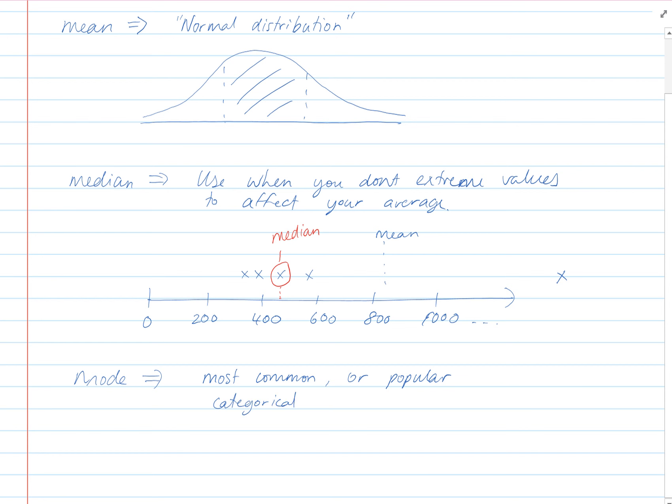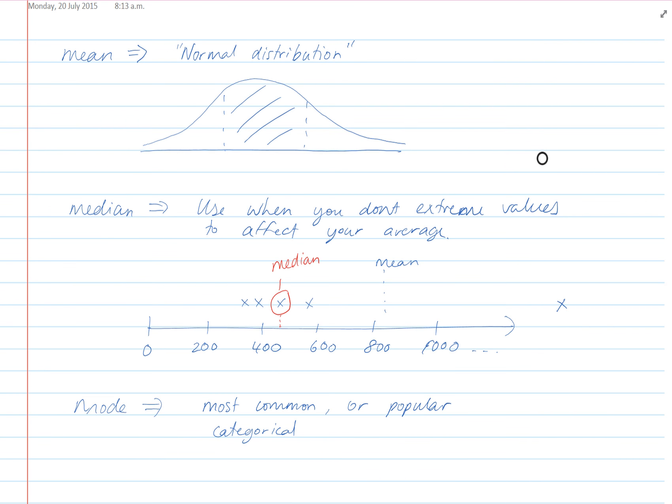But where it's not useful is where we've got a normal distribution or lots of data where all the responses are different. Each average is used in different scenarios. You've got to work out which is the most appropriate.